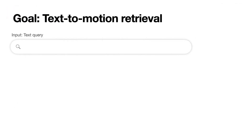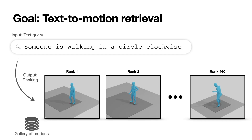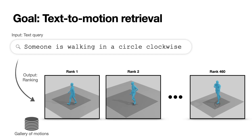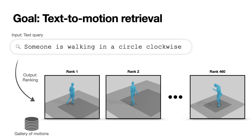Given a query text, such as 'someone is walking in a circle clockwise,' the goal is to rank a gallery of motions by similarity with the text query.